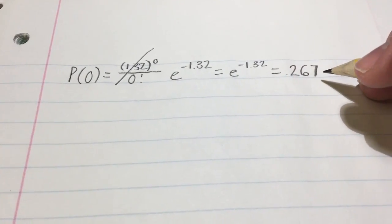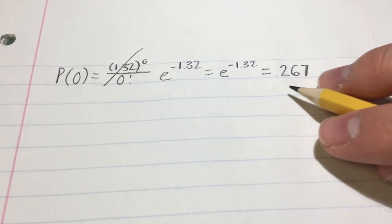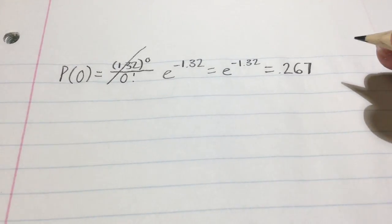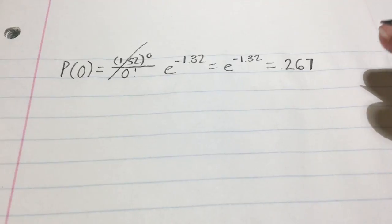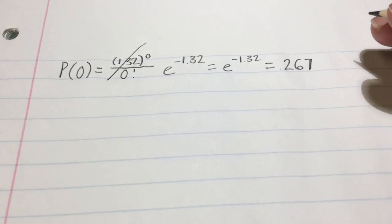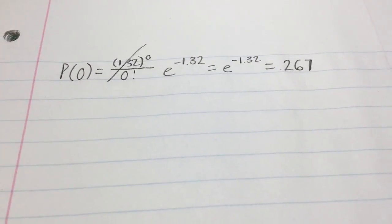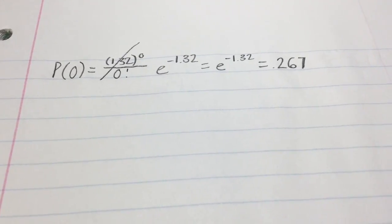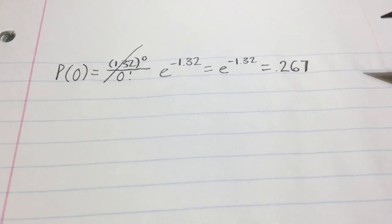...would be 0.267. So the answer would be that the probability that during the next 100 million vehicle miles there will be exactly zero fatal accidents is 0.267.